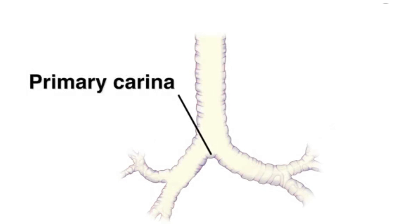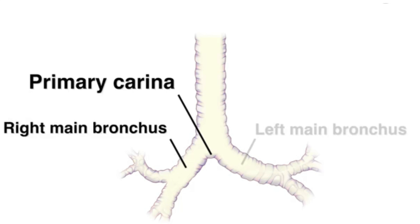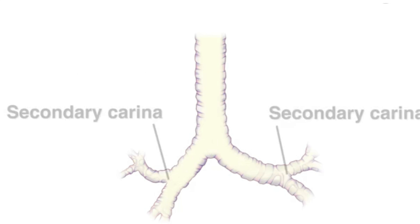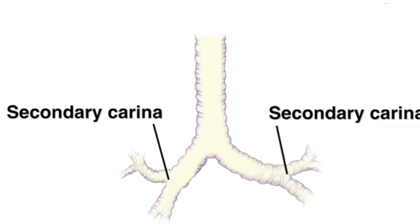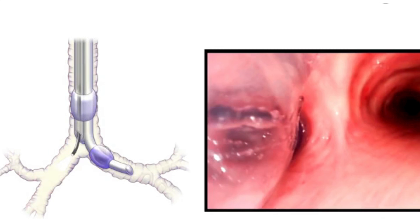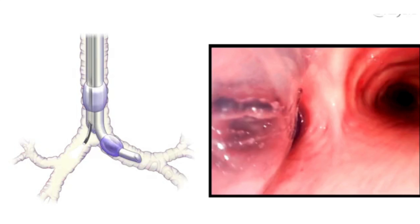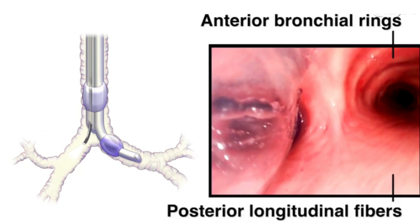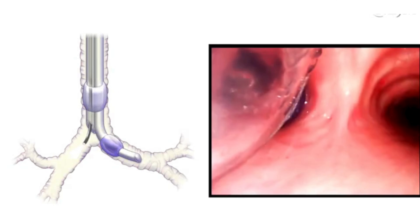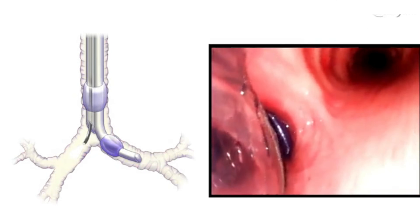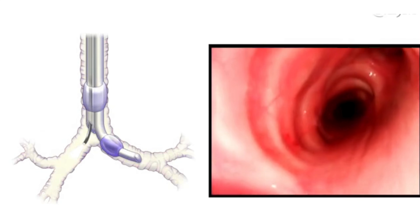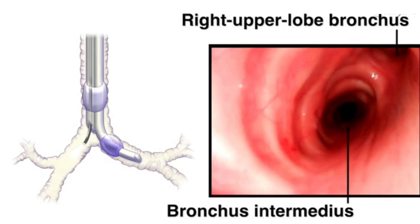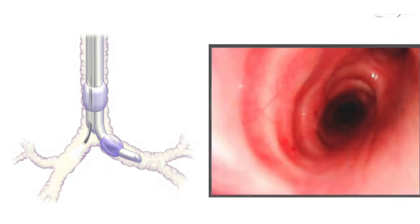Make sure to differentiate the primary carina — that is, the carina associated with the takeoff of either the right or left main bronchus. Various anatomical structures can be used as reference points. For example, visualization through the tracheal lumen of the cathedral-shaped bronchial rings anteriorly and the longitudinal fibers posteriorly can assist with left-right orientation. The right upper lobe bronchus and the bronchus intermedius, which divides into the right middle lobe bronchus and the right lower lobe bronchus, should also be visible and can help to confirm orientation.